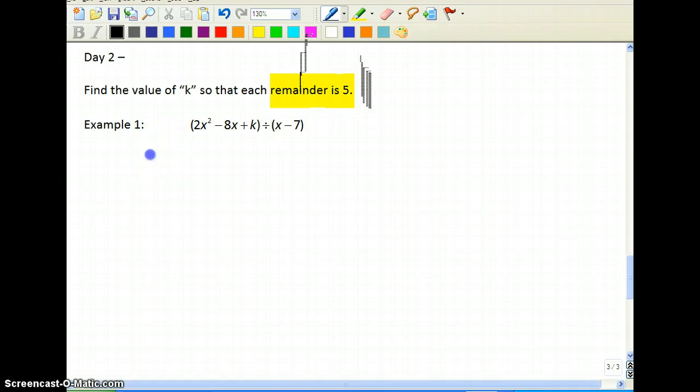So let's use synthetic division. We'll put 7 in the box. Coefficients are 2, negative 8, and k. Underneath the k is the remainder box and the remainder is 5. So we need to put 5 here.